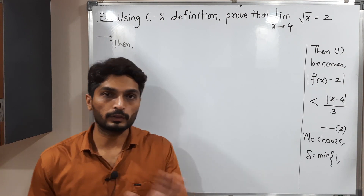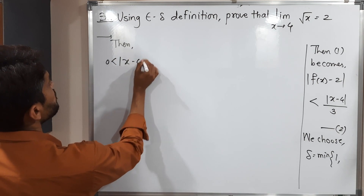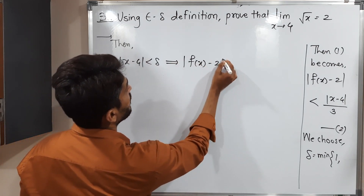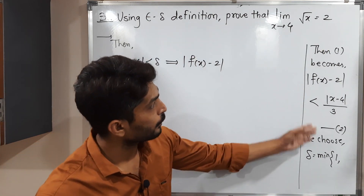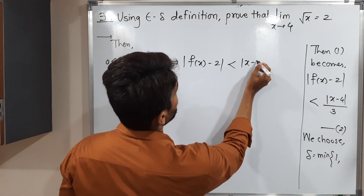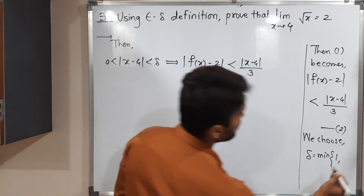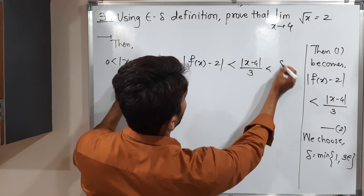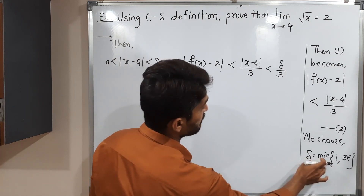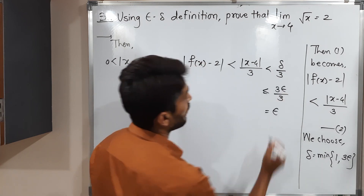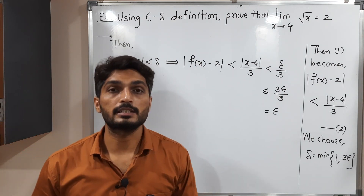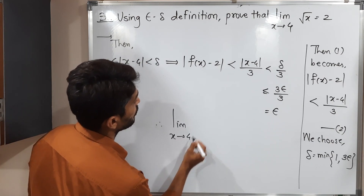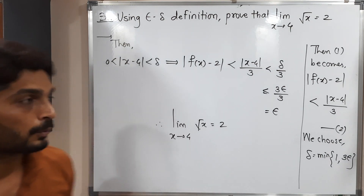Now we go for the definition. Given 0 < |x - 4| < delta, we need to prove that |f(x) - 2| < epsilon. From inequality 2, |f(x) - 2| < |x - 4| / 3. Since |x - 4| < delta ≤ 3ε, this is less than or equal to 3ε / 3 = epsilon. So we succeed in proving the definition is satisfied. Therefore, the limit as x tends to 4 of root x equals 2. QED.